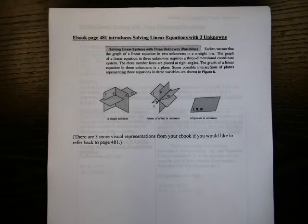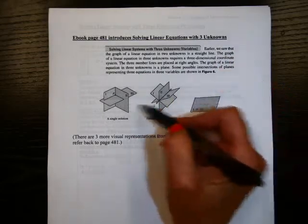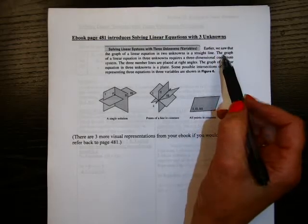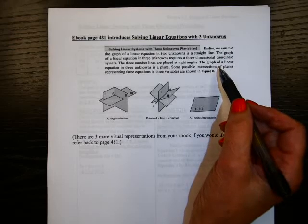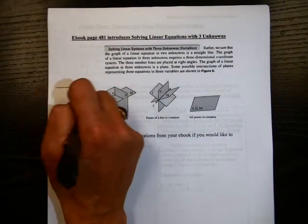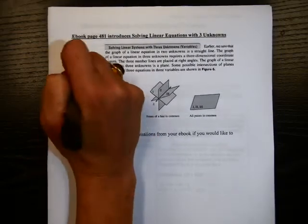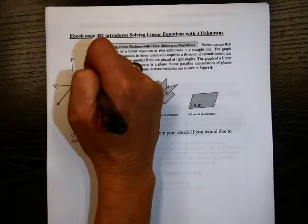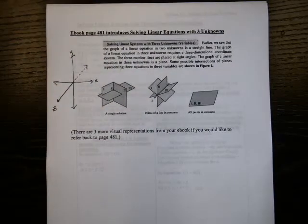In this particular situation, I took this from your e-text. I wanted to show you some visual representations of solving an equation with three unknowns. In a system with three unknowns, you'll notice that you no longer have just an x and y. You're going three-dimensional here. So you're going to have an x-axis, you're going to have a y-axis, and you're going to have a z, which brings it out into the room. So x, y, and z, three-dimensional.